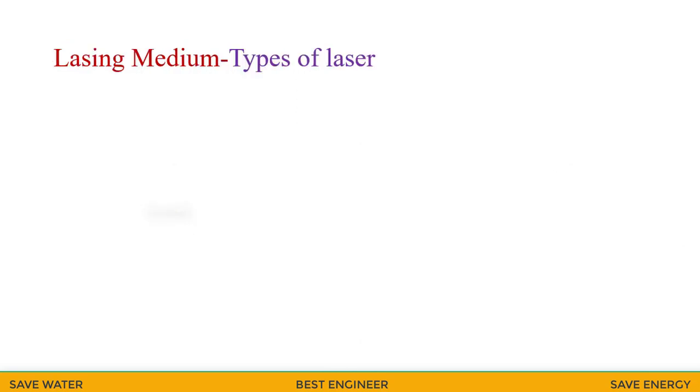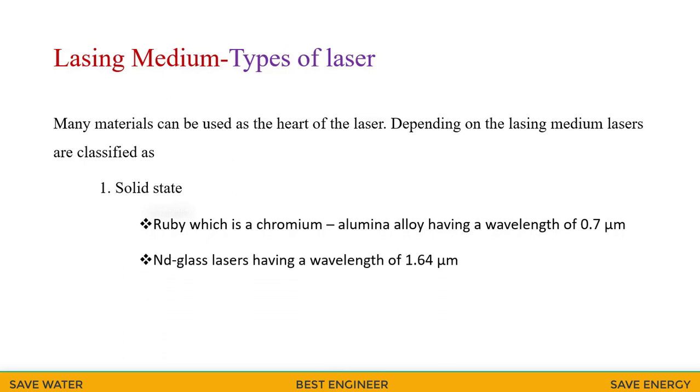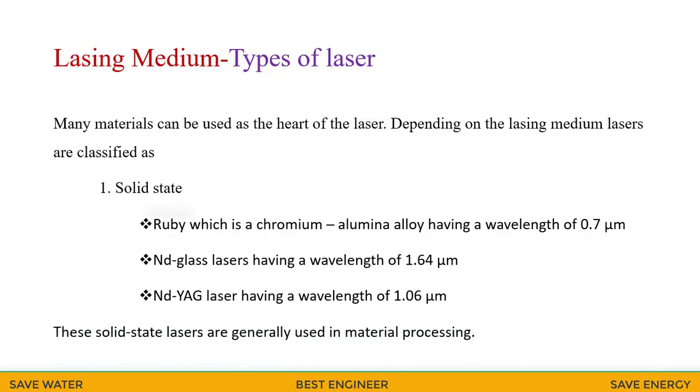Let me see the type of laser. Many materials can be used as a heart of the laser. Depending upon the lasing medium, lasers are classified as two types. First one is solid state laser. Ruby which is a chromium alumina alloy having the wavelength of 0.7 microns. And neodymium glass laser having the wavelength of 1.64 microns. And neodymium YAG laser having wavelength of 1.06 microns. These solid state lasers are generally used in materials processing.